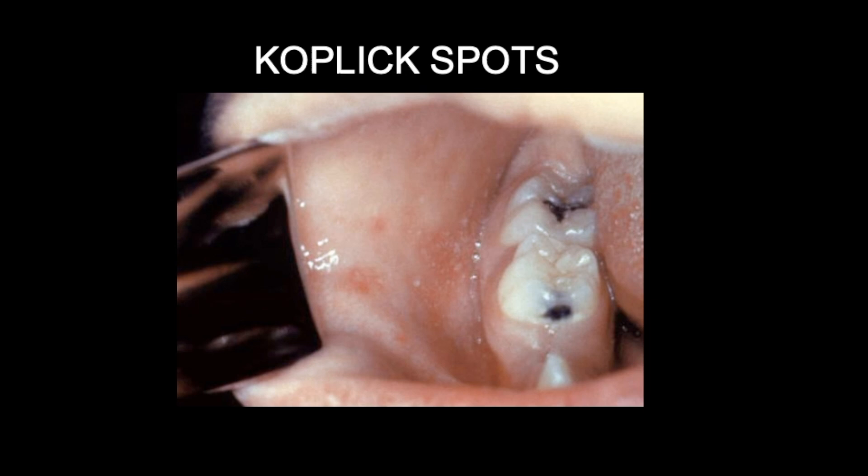What do I mean by a prodromic enanthem? Prodrome is an early sign or symptom that often indicates the onset of a disease before more diagnostically specific signs and symptoms develop. It's derived from the Greek word prodromos, which means running before. Enanthem is simply a rash of small spots on the mucous membrane. Here you can see some of these spots on the inside buccal mucosa of someone's mouth.